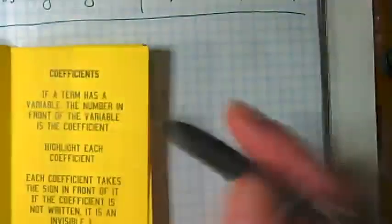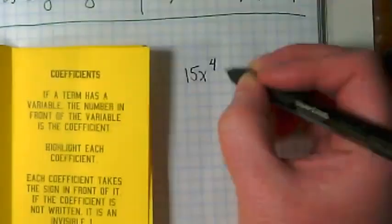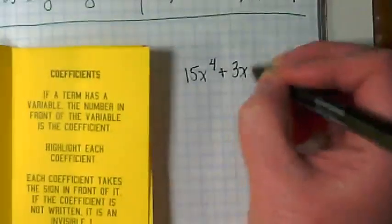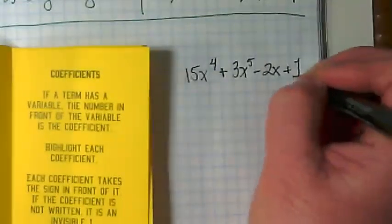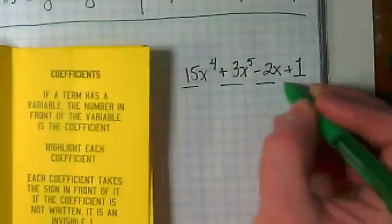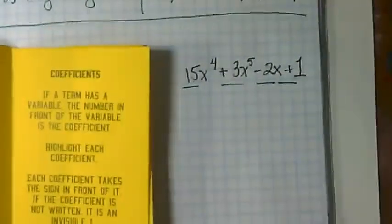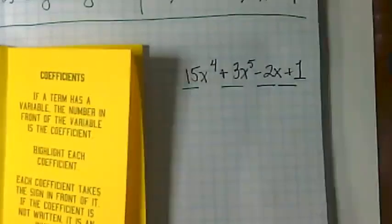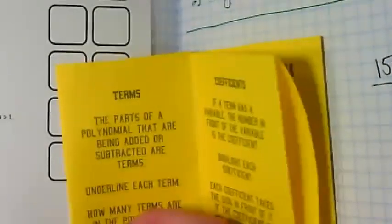So here, let's write our example: 15x to the fourth plus 3x to the fifth minus 2x plus 1. Let's underline those terms. And the question on our page, how many terms are in the polynomial? There's one, two, three, four. So in our example, we have four terms.